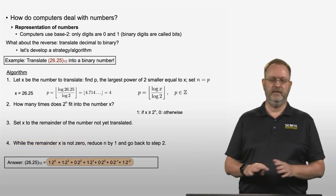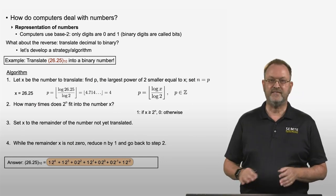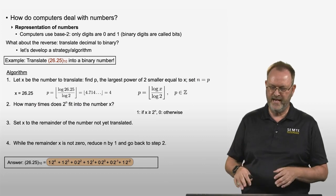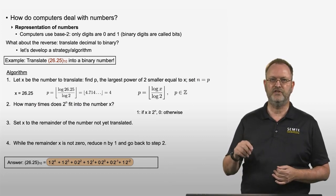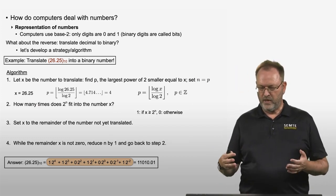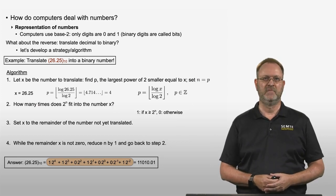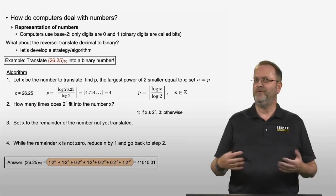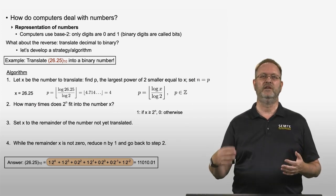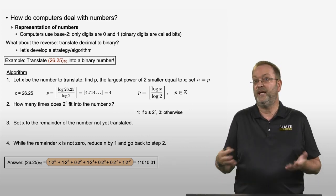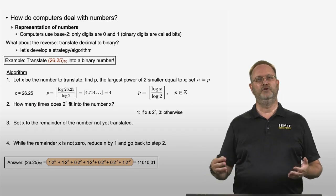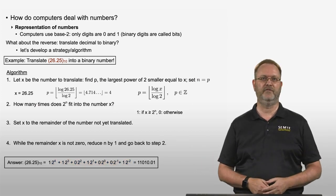We have now written 26.25 as the sum of a digit (1 or 0) multiplying a power of 2. The binary point sits between the digits multiplying 2 to the power 0 and 2 to the power negative 1, giving us the binary number 11010.01. This illustrates a hallmark of numerical algorithms: they use simple math repeated many times, which can be tedious by hand but is perfect for computers. Thank you for watching.